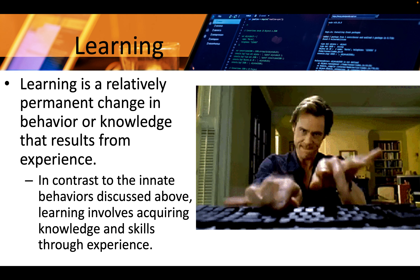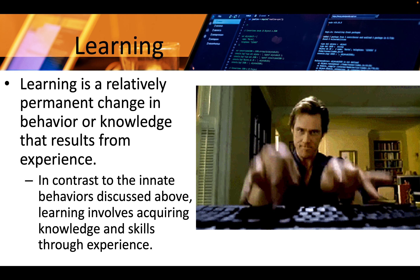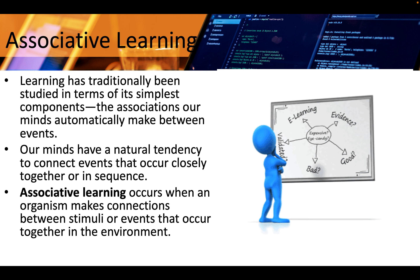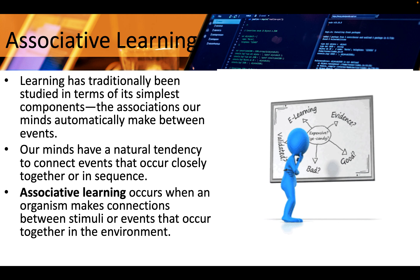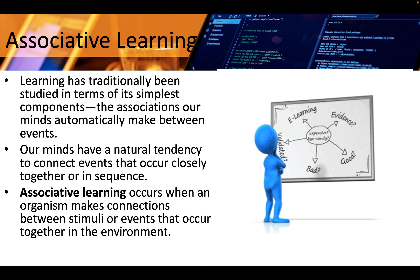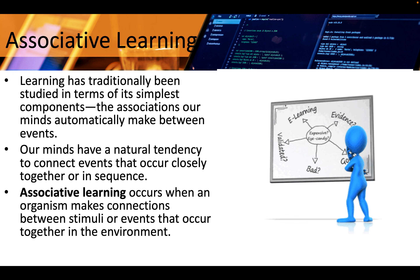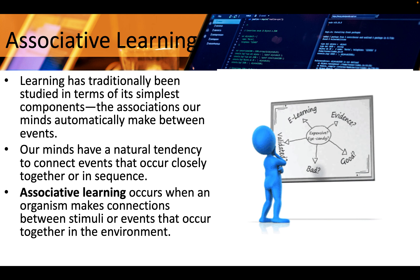In contrast to the innate behaviors discussed above, learning involves acquiring knowledge and skills through experience. Learning has traditionally been studied in terms of its simplest components and the associations our minds automatically make between events. Our minds have a natural tendency to connect events that occur closely together or in sequence. Associative learning occurs when an organism makes connections between stimuli or events that occur together in the environment.